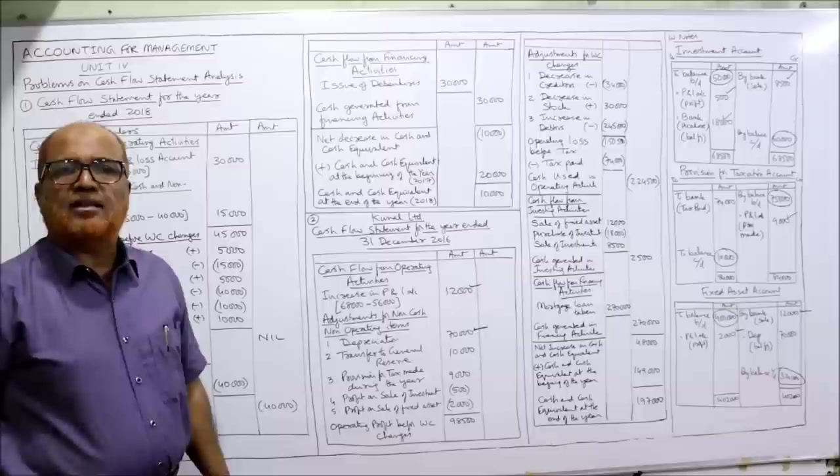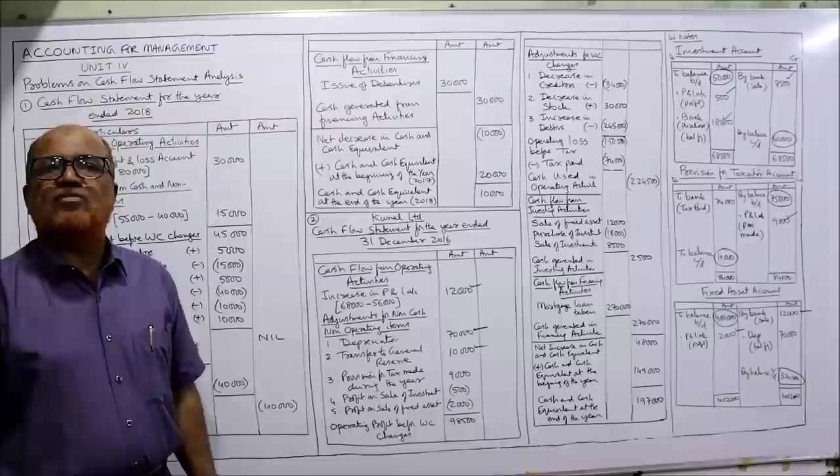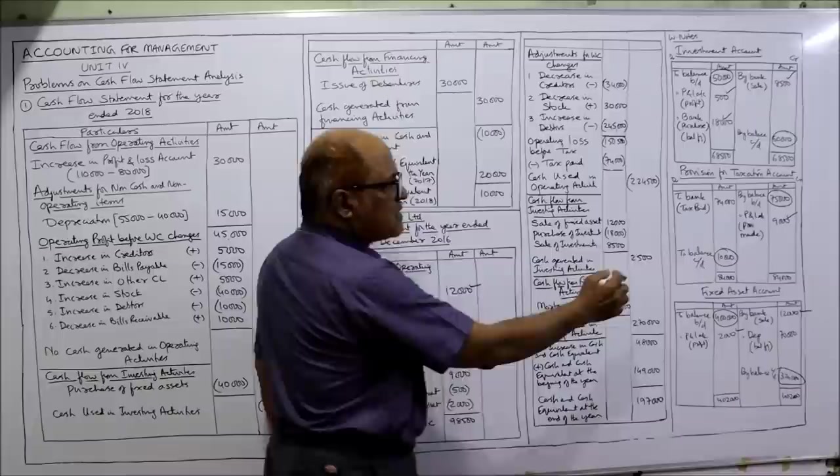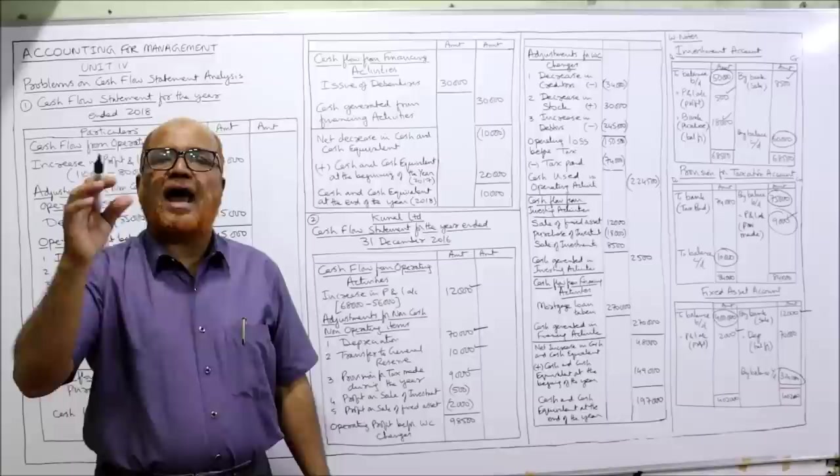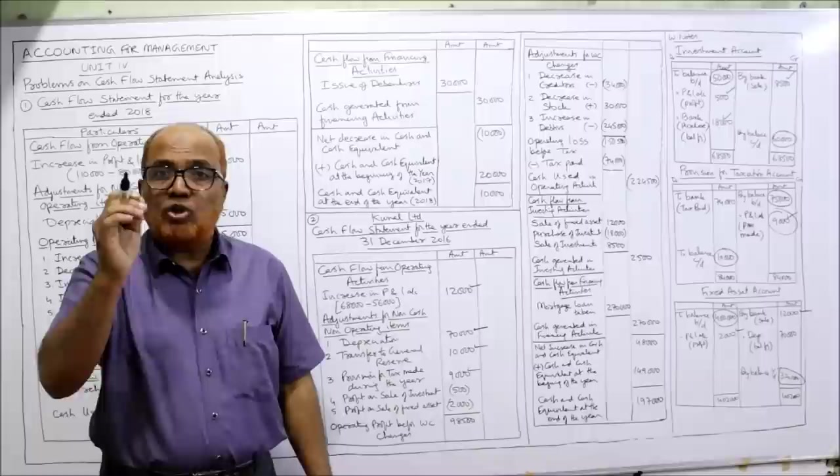Provision for taxation made during the year: 9,000 — non-cash item, added. Now profits on sale of investment and sale of fixed asset should be deducted — because it is a non-cash profit. That profit is included in the cash inflow when we sell the fixed asset or investment; the profit is included in the sale proceeds. So deduct profit on sale of investment: 500. Deduct profit on sale of fixed asset: 2,000. Both in bracket.